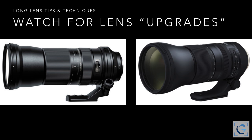A viewer asks if an extension tube would have a similar magnification effect without the light loss of a teleconverter. The answer is no. An extension tube is really just about getting closer focus — it pushes the lens further away, shifting the focus point forward, enabling you to get closer focus with many lenses. I call extension tubes the poor man's macro solution. If you've got a lens that doesn't focus especially close, you can add an extension tube and get even closer. But an extension tube is really about closer focus, not magnification.